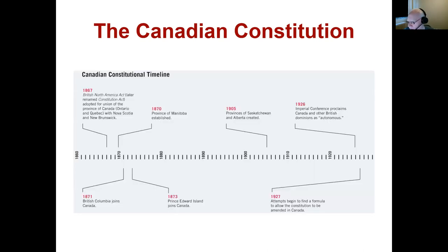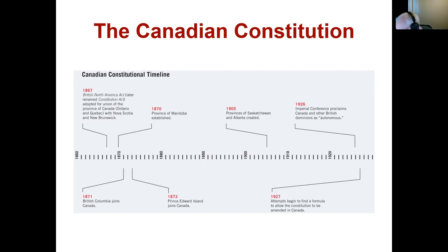Here's a timeline of the Canadian constitution. In 1867, the British North America Act — later renamed the Constitutional Act — was adopted for the union of the Province of Canada with Nova Scotia and New Brunswick, forming the basis of the new country of Canada. In 1870, Manitoba was established as a province; British Columbia in 1871 and PEI in 1873 were added. In 1905, Saskatchewan and Alberta were created as provinces. In 1926, the Imperial Conference proclaimed Canada and the British dominions as autonomous.